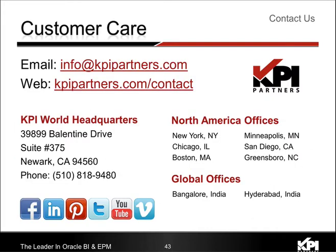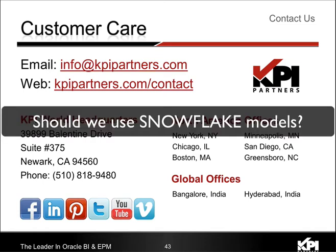Let's dive into the questions. First question: Jeff, you mentioned to not use Snowflake models when optimizing design — can you elaborate on that a little bit more? Yeah, sure. There are features inside Oracle Database and SQL Server called star transformation. The star transformation assumes you have a large centralized fact table with a series of smaller dimension tables in a hub-and-spoke kind of picture.